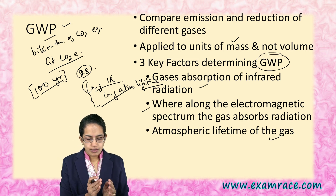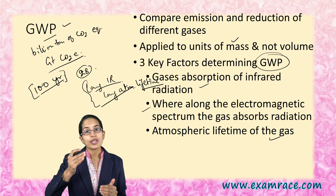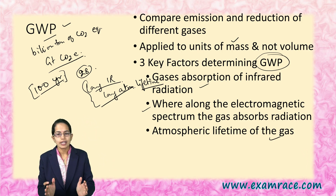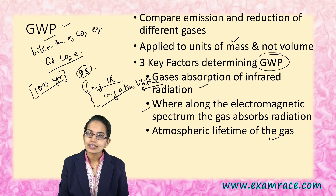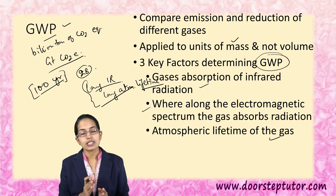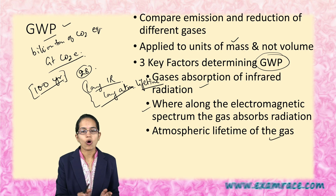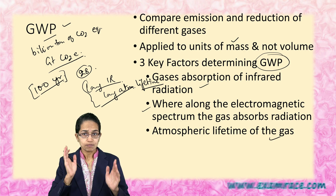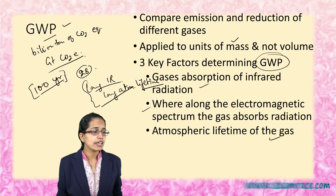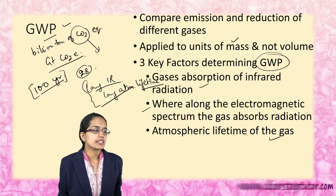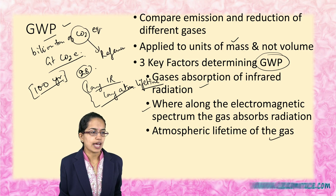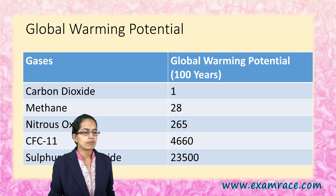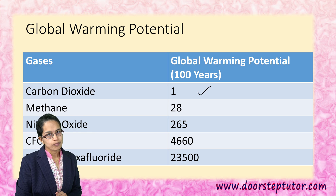Why have we taken carbon dioxide as the base? Carbon dioxide is considered as a reference gas because it is consistent with the guidelines of the Intergovernmental Panel on Climate Change, that is IPCC. And therefore, CO2 is considered as a reference gas. Whenever we say this is a reference gas, that automatically means the value for this would be 1.